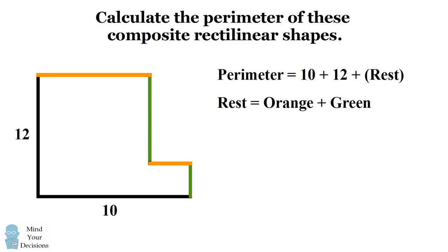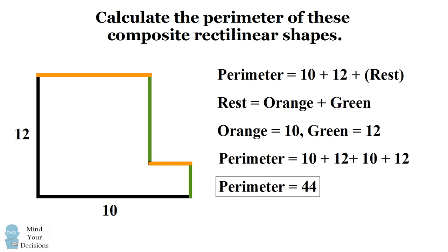So we can deduce the total length of the unknown orange edges is equal to 10, and the total length of the unknown vertical edges, which are in green, are equal to 12. We now have enough information to calculate the perimeter, which will be equal to 44.